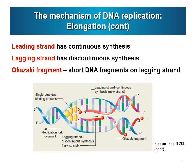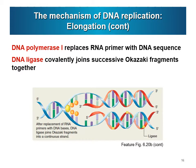In the elongation process, DNA polymerase I and DNA ligase play key roles. DNA polymerase I replaces the RNA primers with DNA sequences. Then DNA ligase joins successive Okazaki fragments to one another with a covalent bond.